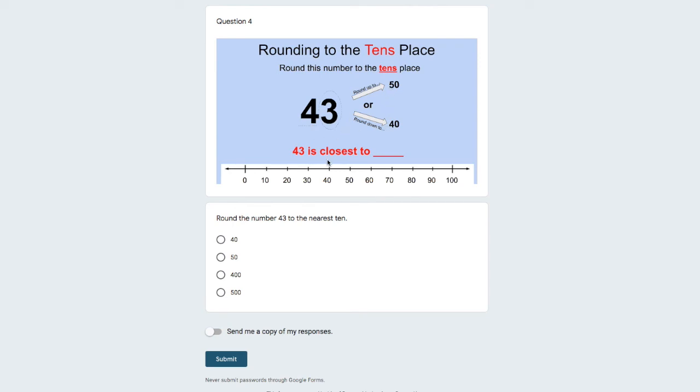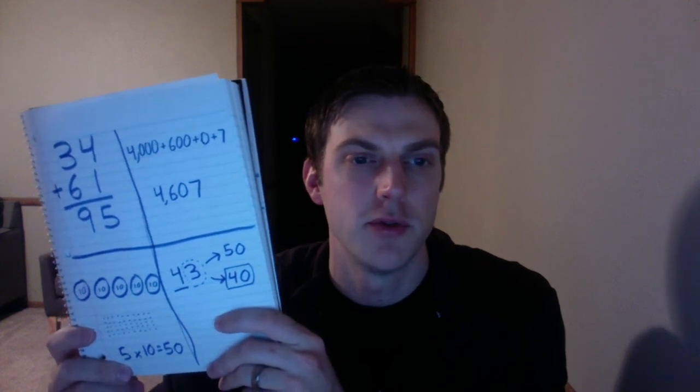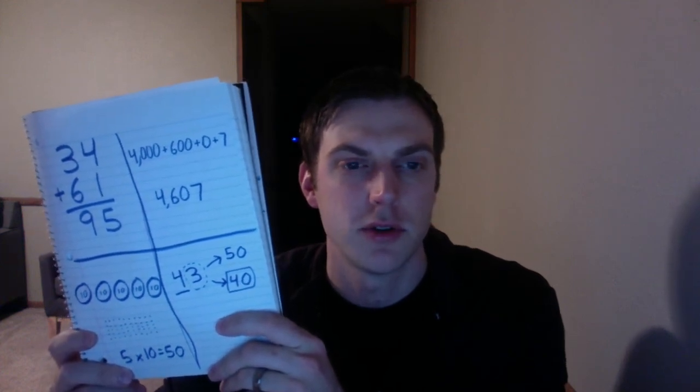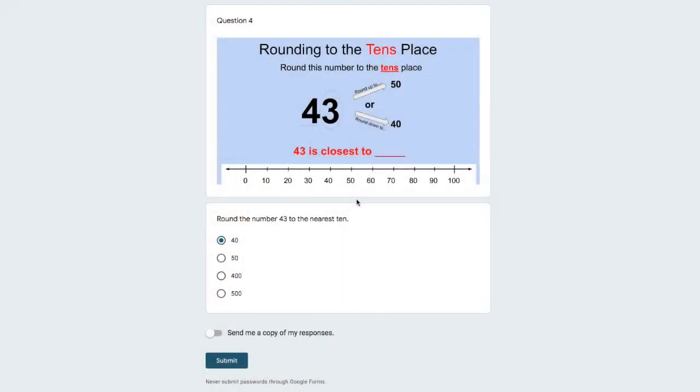But which number is 43 closest to? Is it 40 or 50? If I think about my number line, 43 would be about here, which would be closer to 40 than 50. If I want to use my shortcut, I could also solve it by looking at the 4, then looking next door and asking, is that number next door 5 or more? Number 3 is not, so I'm going to round this number down to 40. Here's the work I wrote down. I use the shortcut method to prove that 43 is closer to 40. Now that I know that the answer is 40, I'm going to click it in the answer choices down below, and I've completed all the questions for my math work for today.